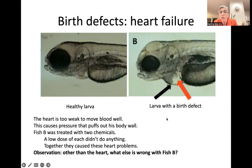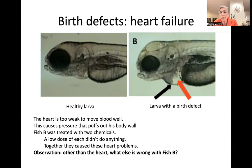Can you detect anything else wrong with fish B? Have a look for a minute. You might notice that the top of its head looks a bit funny and its face is too flat. Its jaw looks okay, but there are some other things wrong with its head. So sometimes birth defects show up in a couple of different places in the body. With my research, what I'm trying to do is find out what kinds of environmental chemicals may cause problems in fish, and then make sure that humans don't suffer from exposure to those same chemicals.